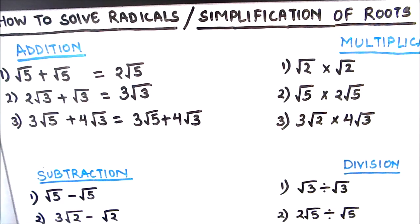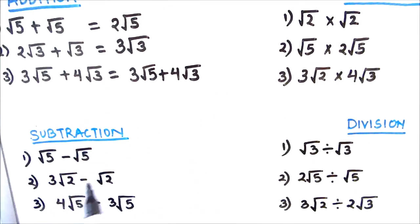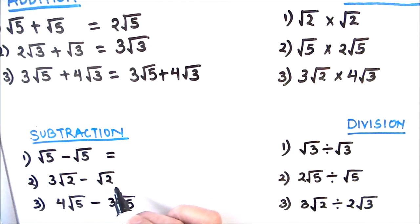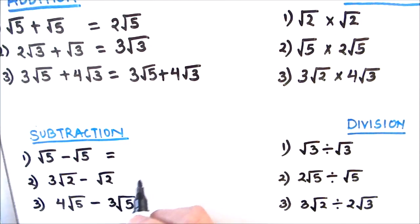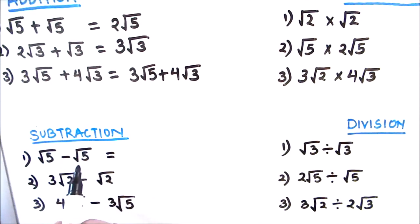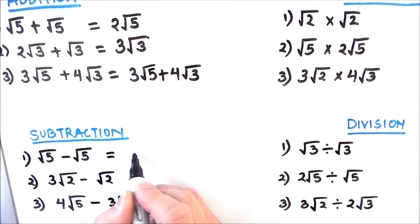Next we will move on to subtraction of roots. Subtraction and addition follow the same rule — if the numbers under the roots are the same, we can directly subtract the coefficients. If the numbers are different, we cannot subtract. For example, root 5 minus root 5 is the same as x minus x, so root 5 minus root 5 equals 0.